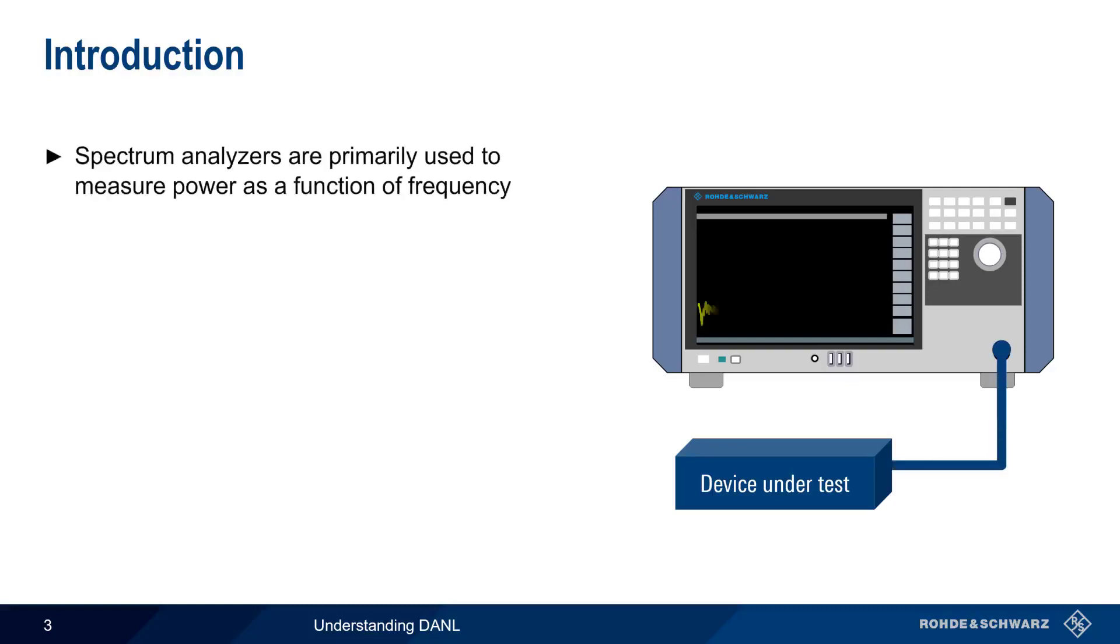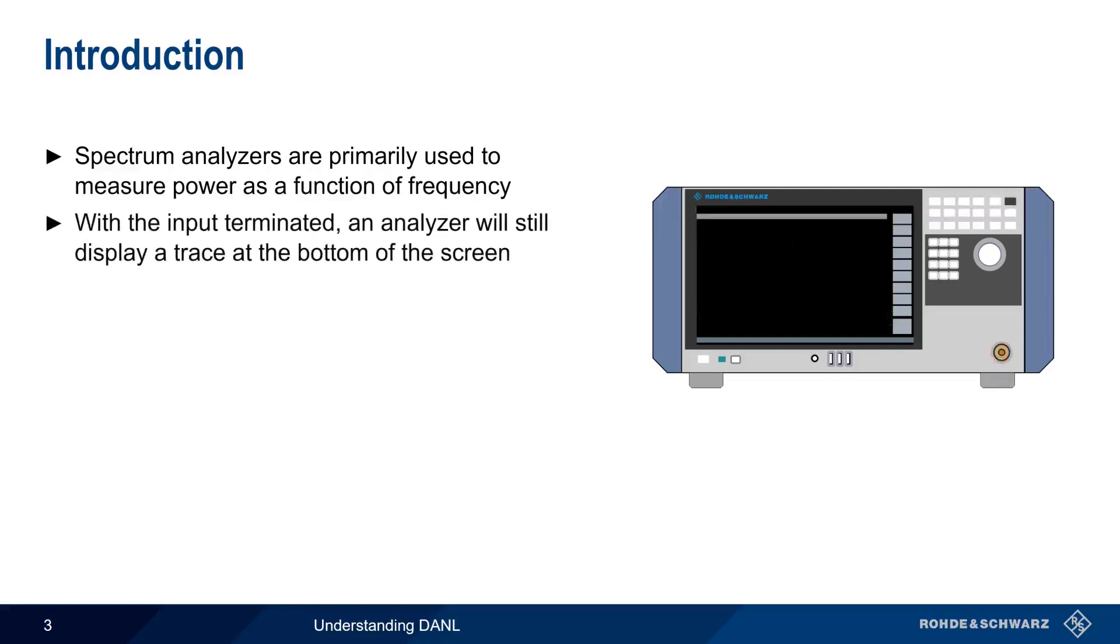Spectrum analyzers are primarily designed and used to measure power as a function of frequency. However, even with its input terminated, a spectrum analyzer will still display a trace along the bottom of its screen. This trace represents the noise generated within the analyzer itself. All spectrum analyzers produce noise internally, although the amount of noise can vary significantly between analyzers.